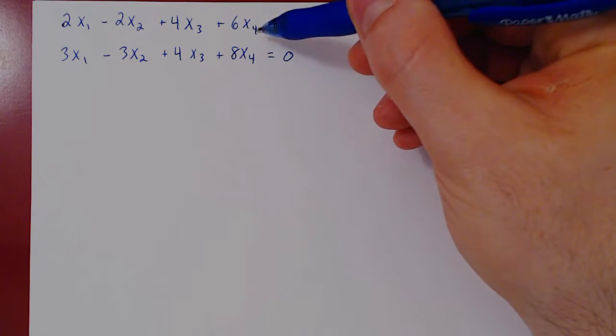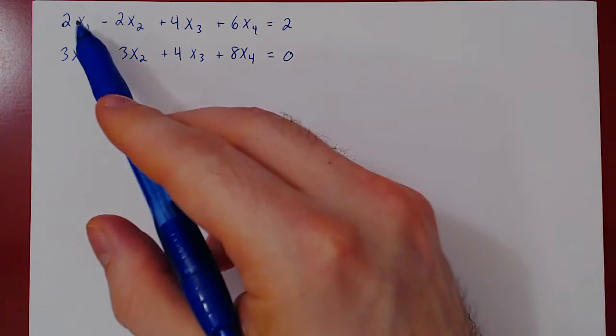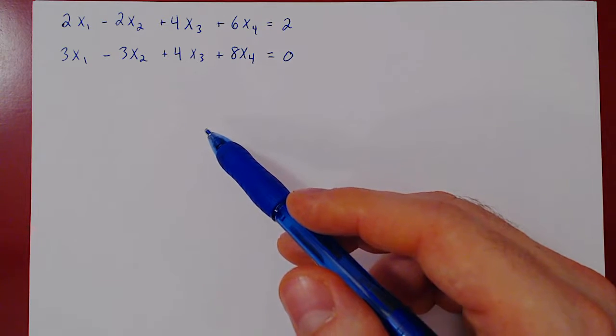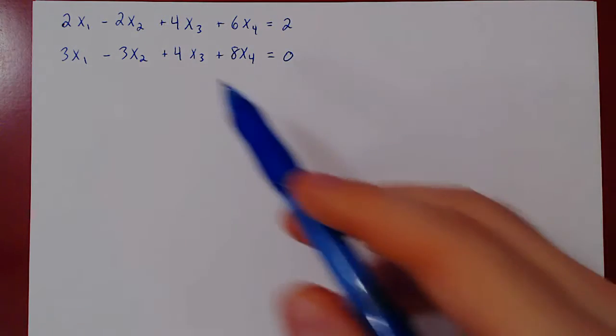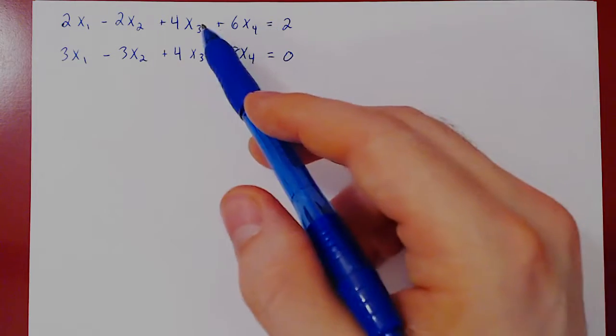Now, indexing variables is very useful if you have a large number of variables. We could have used here x, y, z, and w, but what if we have a system with, say, a thousand variables? We're running out of letters. So when you start having a lot of variables, then you start indexing them.